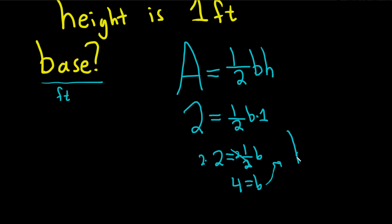So writing it backwards, B equals 4, and don't forget the units, feet. And that would be the final answer.